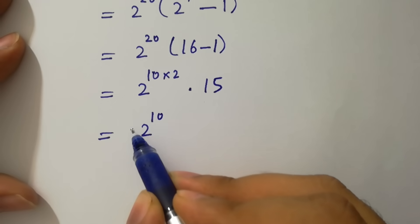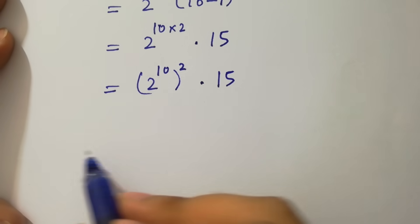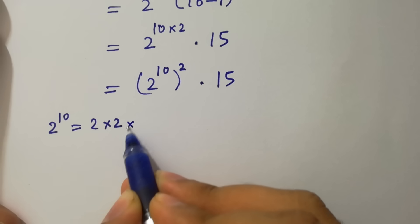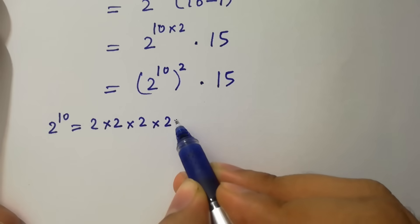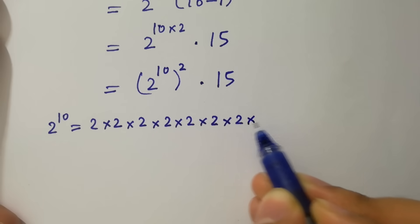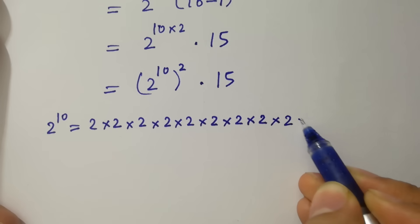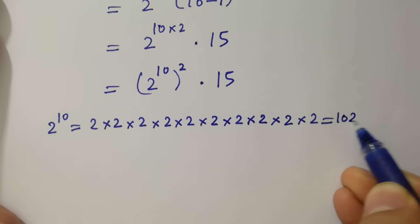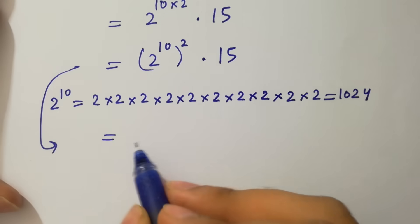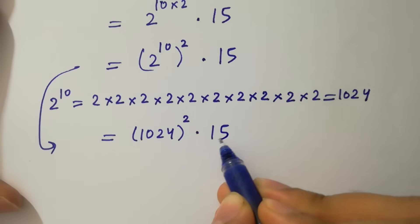We can write 2 to the power 20 as (2 to the power 10) to the whole power 2 times 15. Now 2 to the power 10: 2, 4, 8, 16, 32, 64, 128, 256, 512, 1024. So 2 to the power 10 equals 1024, giving us 1024 to the whole power 2 times 15.